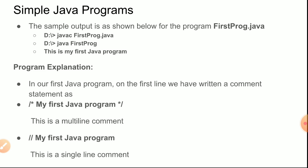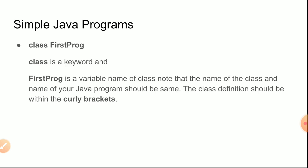In our first Java program, the first line is a multi-line comment 'My First Java Program', and the second is a single-line comment using double-slash. 'class' is a keyword and 'FirstProc' is a user-defined name — you can give your own name like 'FirstProgram' or 'DemoProgram'. But 'class' is a keyword you cannot change, and Java is case-sensitive, so the first letter of 'class' must be lowercase 'c'. The class definition must be within curly brackets.